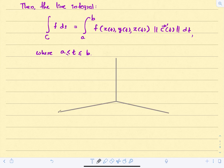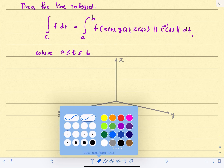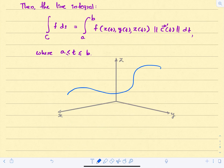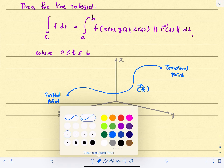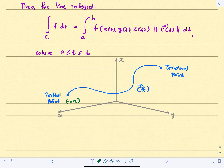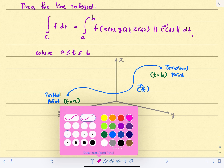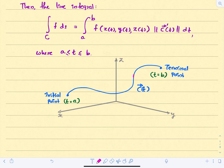We have the x, y, and z axes, and we draw the curve C(t). The curve has an initial point — where t equals a — and a terminal point, or final point, where t equals b. The element ds is a small line segment along this curve.